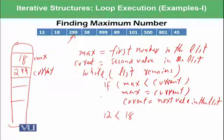Then it is moving again to the next iteration because list remains. This loop is true. If max is less than current, max is 18 and current is 299. Yes, the condition is again true. So 299 is assigned to max using this statement. So 299 comes to max and current is moving to next location, which is 38.